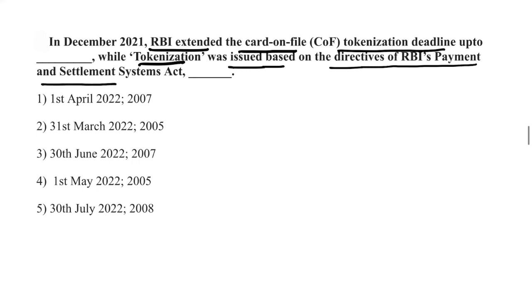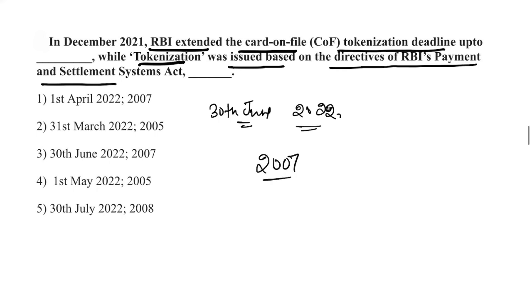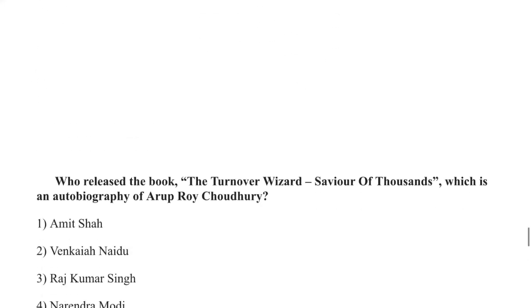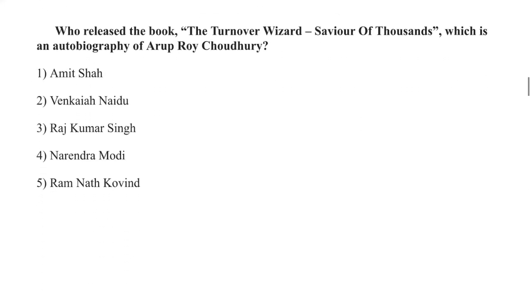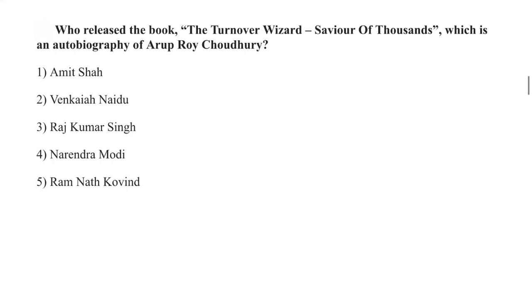RBI extended the card-on-file tokenization deadline to 30th June 2022. This was under RBI's Payment and Settlement Act of 2007.